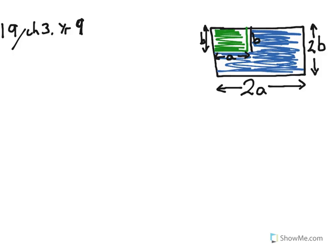Okay, so we have question 19 in chapter 3, the year 9 book, and it says calculate the expression and simplify it for the area of the blue, the area that's coloured blue in the rectangle.